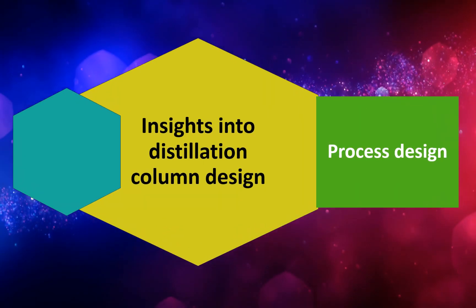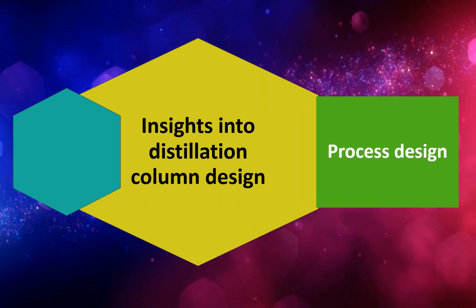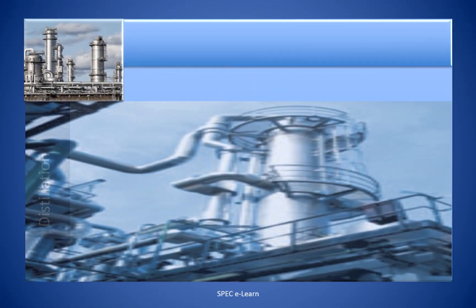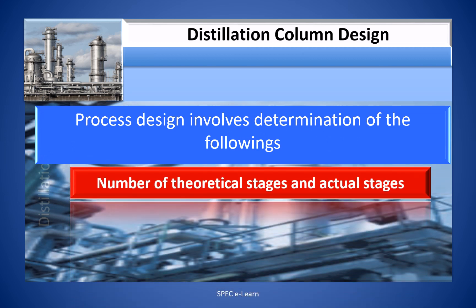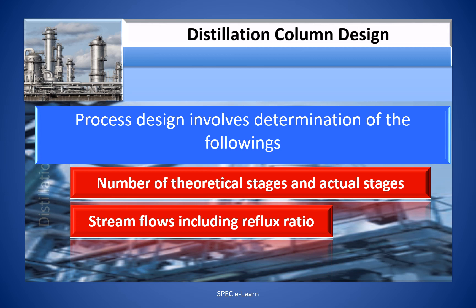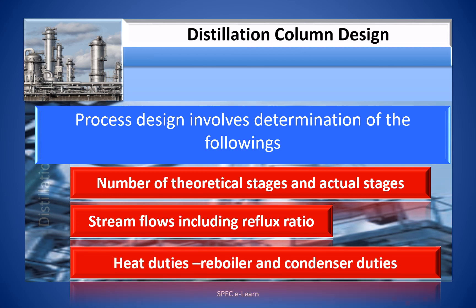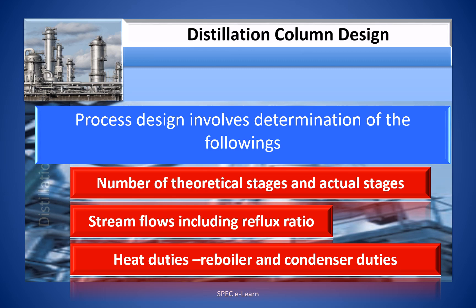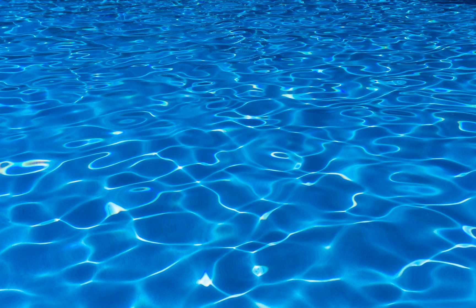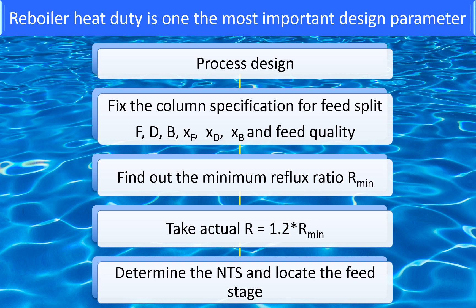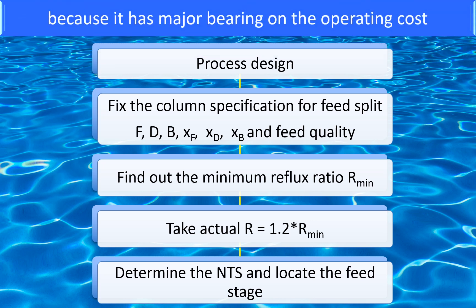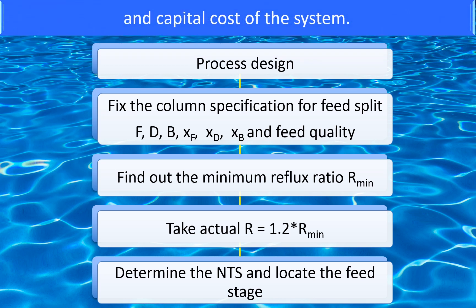Insights into distillation column design — process design. Process design involves determination of the number of theoretical stages and actual stages, stream flows including reflux ratio, heat duties, and reboiler and condenser duties. The steps involved in the process design of the distillation column, including reboiler heat duty and condenser heat duty, are provided in the diagram. Reboiler heat duty is one of the most important design parameters because it has a major bearing on the operating cost and capital cost of the system.